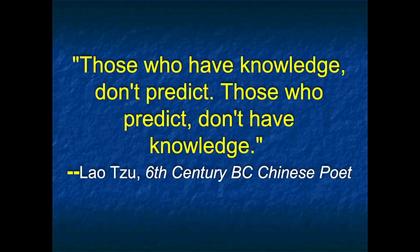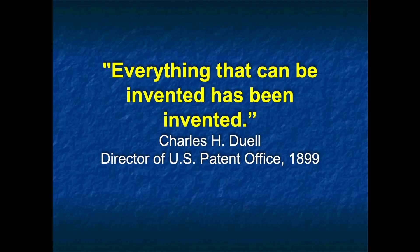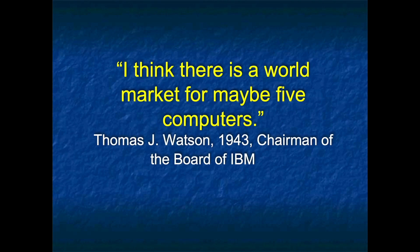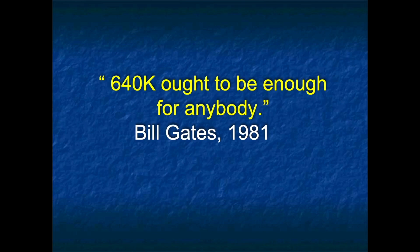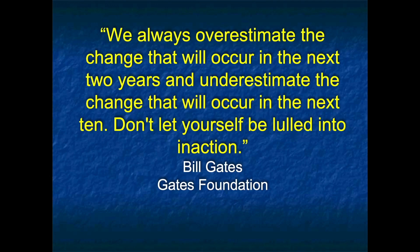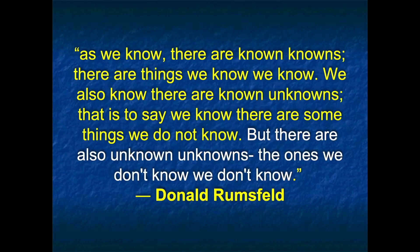Those who have knowledge don't predict; those who predict don't have knowledge — a very old and wise quote. Even smart people were poor predictors: Charles Dell, head of the patent office over 100 years ago, felt everything that could be invented had been invented. Tom Watson, founder of IBM, thought there was a market for maybe five computers. And Bill Gates said '640K ought to be enough for anybody.' But perhaps his better quote is: we always overestimate the change that will occur in the next two years and underestimate the change in the next ten. Don't let yourself be lulled into inaction. Things come along that are really hot, but many will take a while to develop.